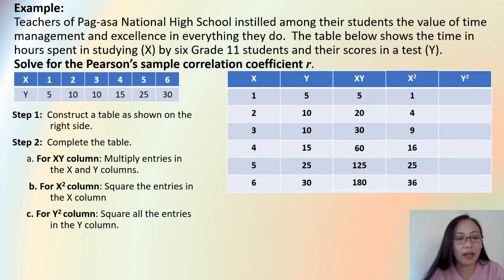And then for the last column, we will square all the entries in the Y column. So, we will square the entries here. We will multiply the entries to itself. So, there you go. 5 squared or 5 times 5, you have there 25. 10 squared, that is 100. 10 squared, 100. 15 squared is 225. 25 squared, that is 625. And 30 squared, that is 900.